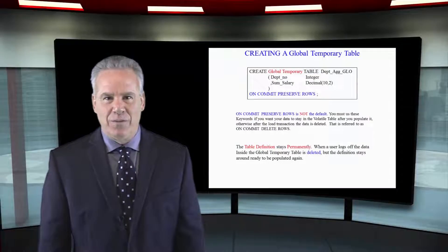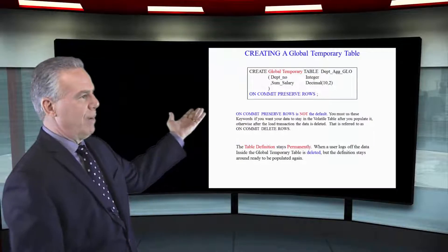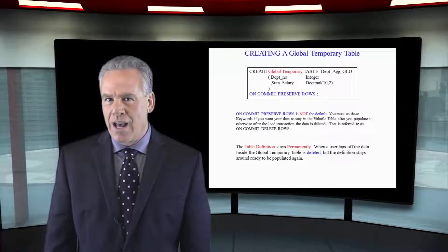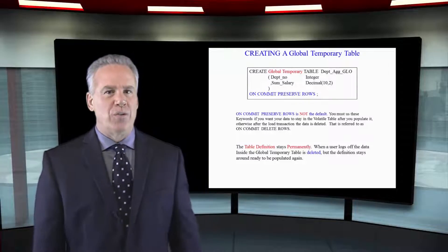Here's a simple example of creating my global temporary table and I want you to notice the on commit preserve rows statement.